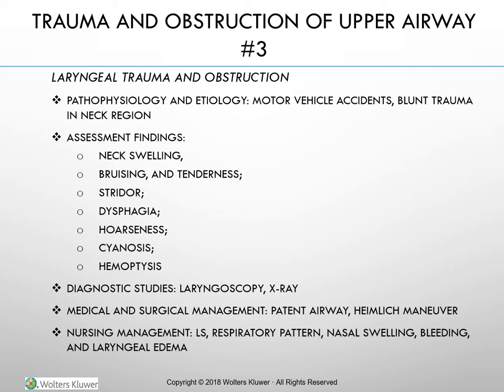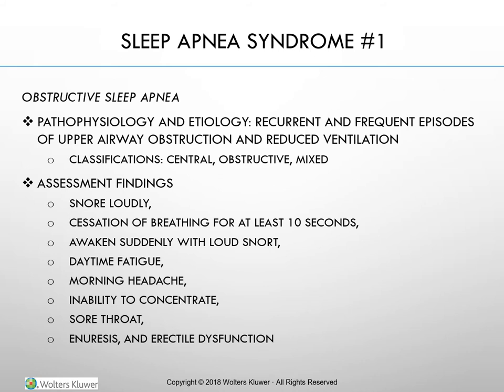Obstructive sleep apnea is characterized by recurrent and frequent episodes of upper airway obstruction and reduced ventilation. Apnea (cessation of breathing) occurs as a result of upper airway obstruction, generally when the tongue collapses against the soft palate and the soft palate collapses against the back of the throat. Central sleep apnea is not a result of obstruction, but rather occurs because the brain fails to signal the muscles to breathe. It is not as common and is usually the result of a specific medical condition or medications. Complex sleep apnea is a combination of the two conditions. Obstructive sleep apnea is the most common and will be the primary focus for this discussion.